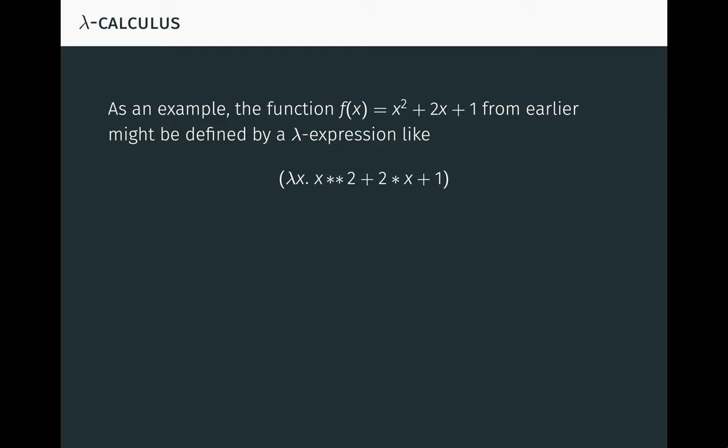Defining a function like this is called abstraction. A computation like f(3) = 16 is then represented like this. Here we are applying the lambda expression to the input 3. This reduces to 3² + 2×3 + 1, which is just the result of substituting 3 for x in the body of the lambda expression. This in turn reduces to 9 + 6 + 1, which in turn reduces to 16, which can't be reduced any further.